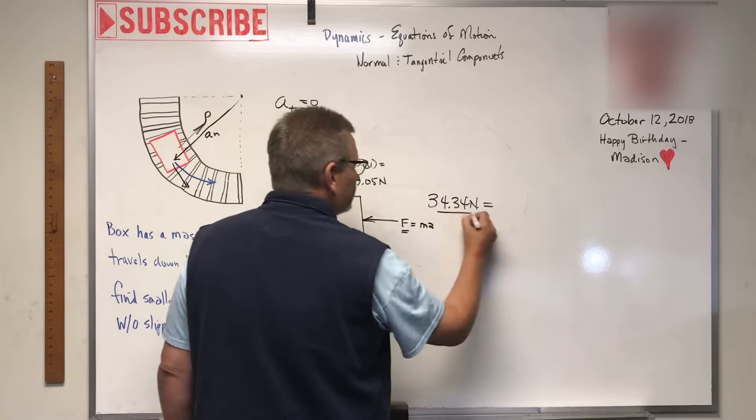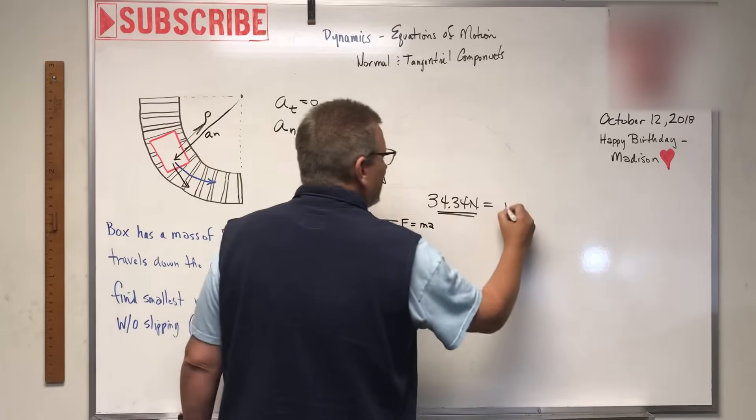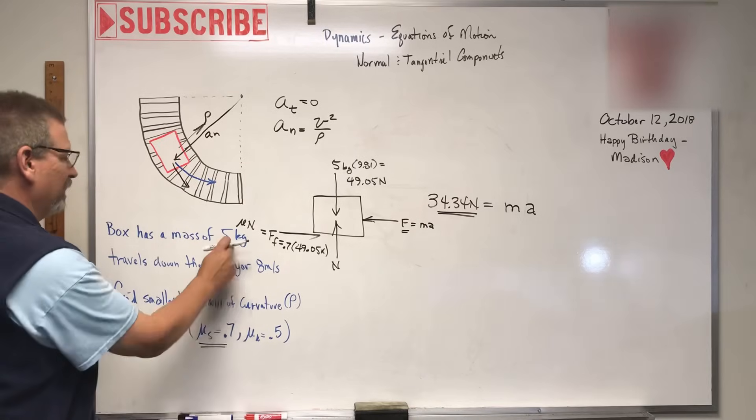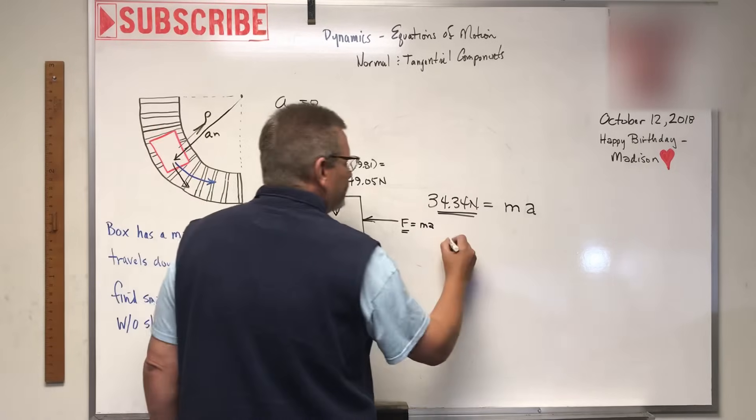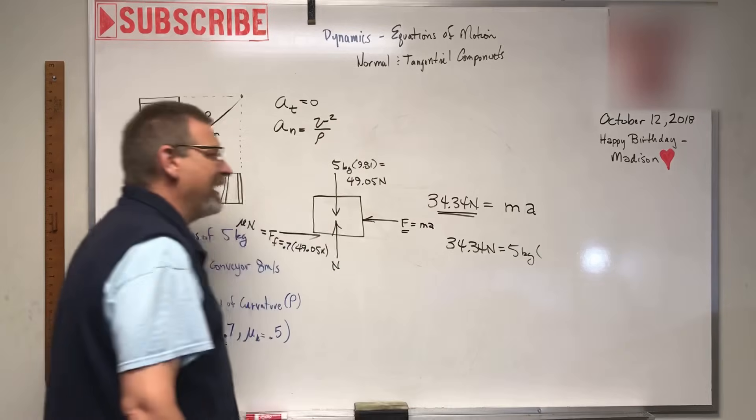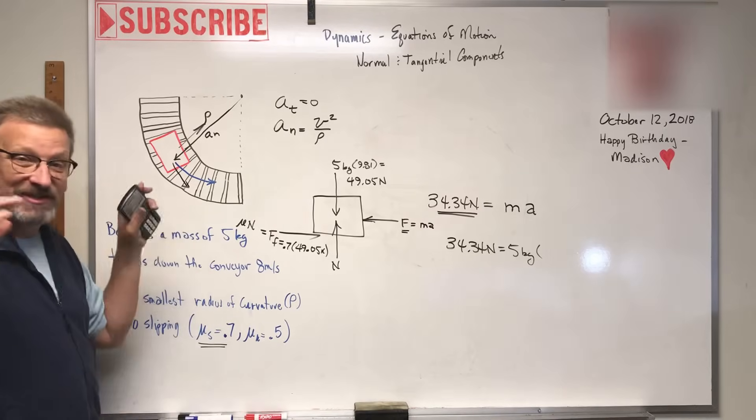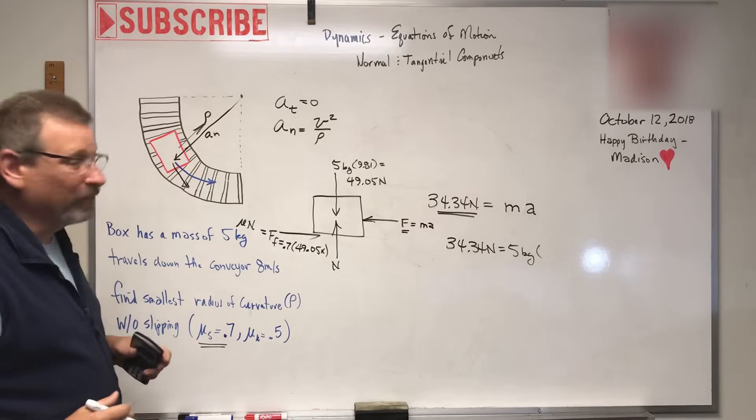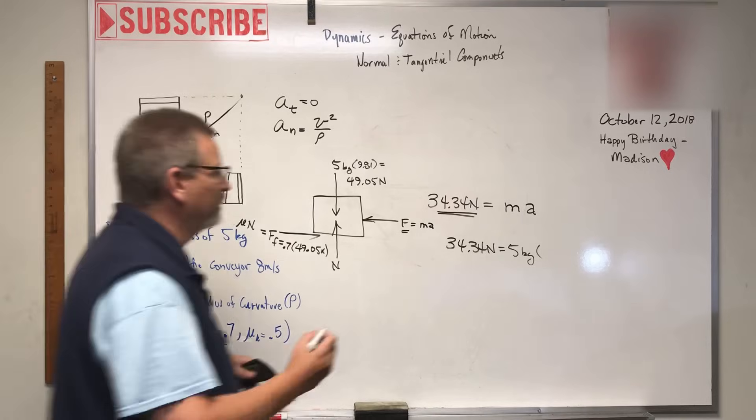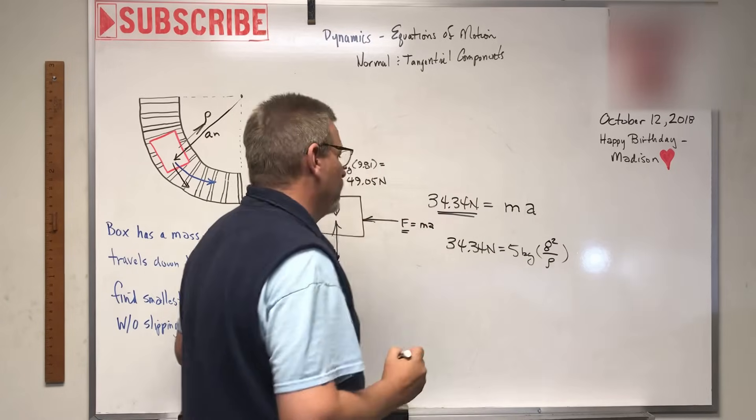The force here - we already know the most it can take before it starts to slide - equals ma. We know m, it's five kilograms. So 34.34 newtons equals five kilograms times a. What is the acceleration? The tangential acceleration is zero, so all we have is the normal acceleration, which is v²/ρ. We know v is eight meters per second, so 8²/ρ.